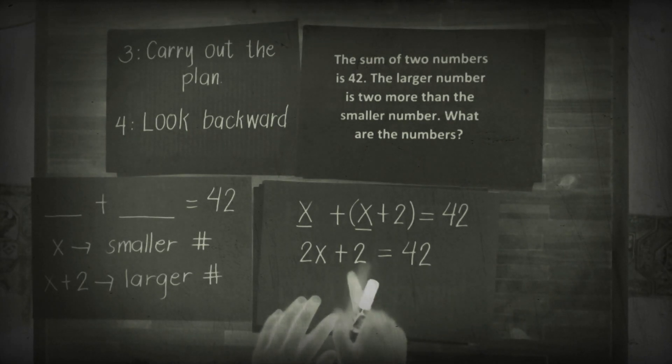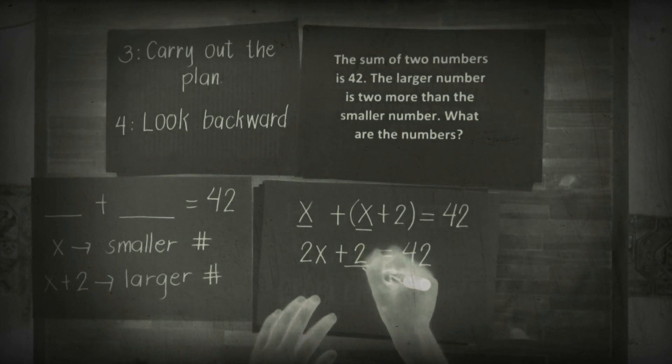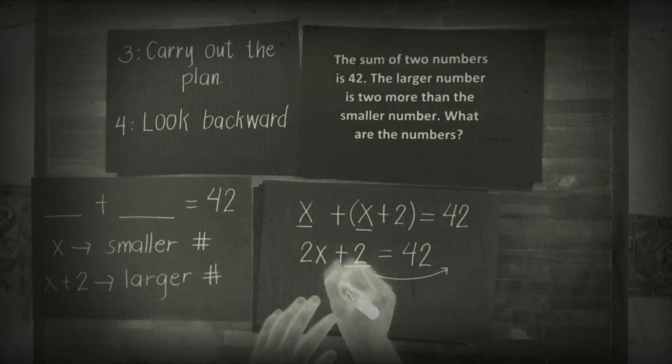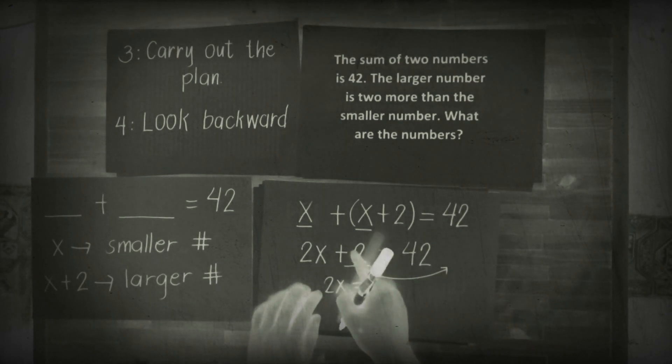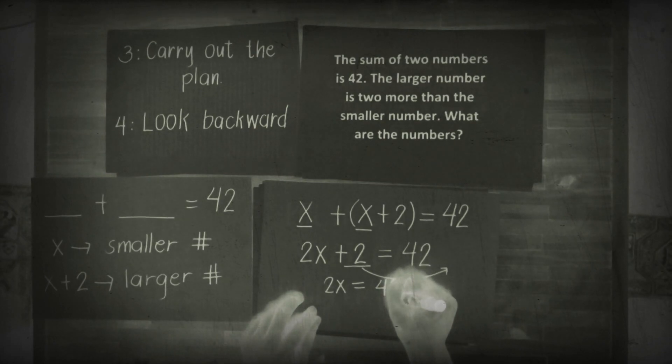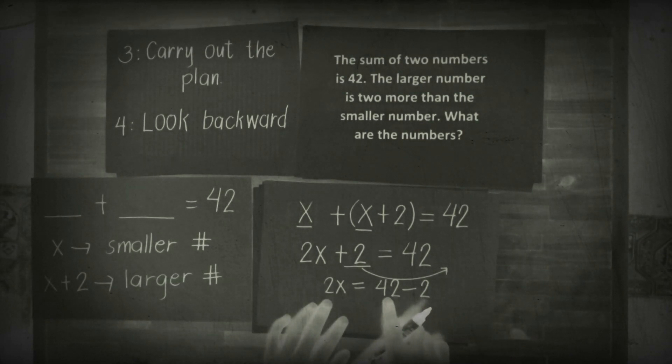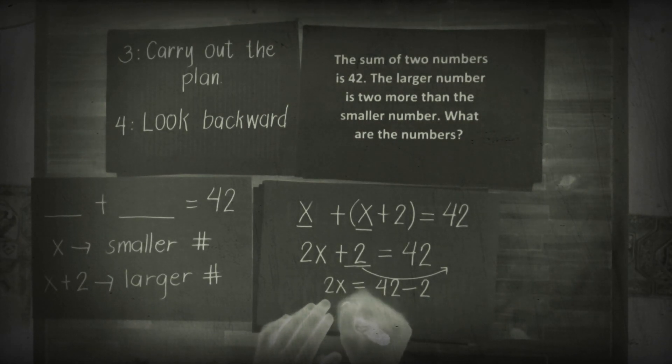Then 2x plus 2 equals 42. Using the balibag method, this 2 moves to the other side and changes sign. So we have 2x equals 42 minus 2. Why did we move the 2? Because our goal is to find the value of x, so x must be isolated. We isolate 2x on one side, and the constants 42 minus 2 on the other. Then 2x equals 40.